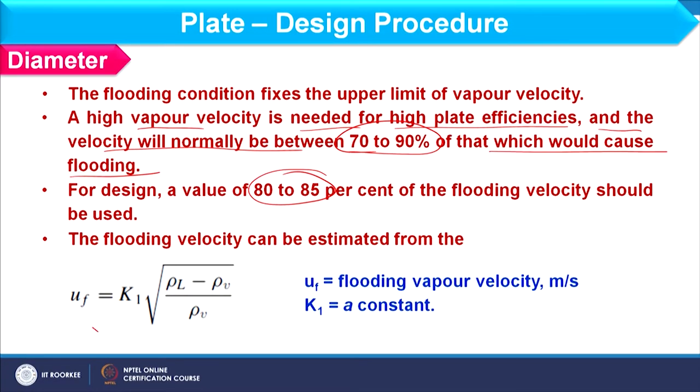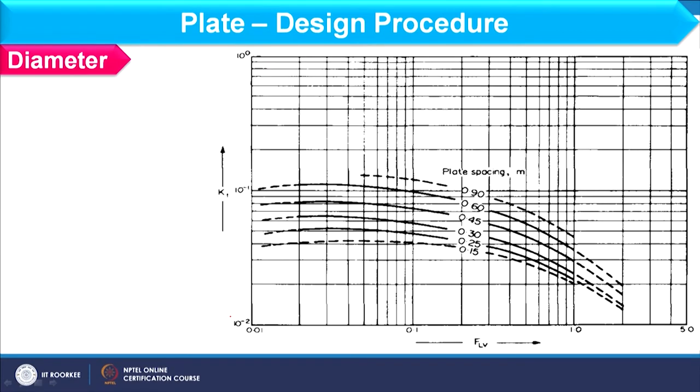Based on that vapour velocity, whatever mass flow rate of vapour is occurring in the distillation column — its value we cannot change because that is the process condition. However, we can design the plate to accommodate the flow rates required from the vapour side and liquid side. We will proceed to calculate diameter accordingly. Here is the empirical correlation for flooding velocity, where Uf is the flooding vapour velocity and K1 is a constant. We also have the physical properties — the density of vapour and liquid.